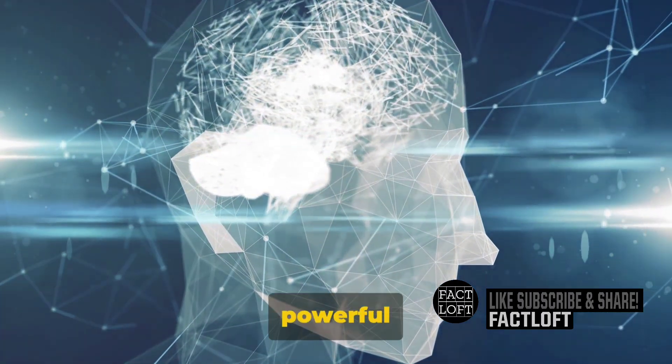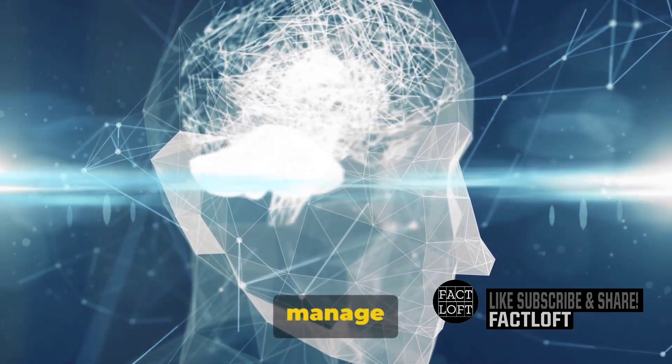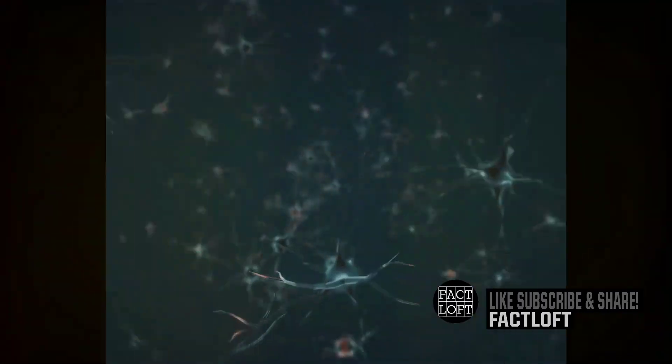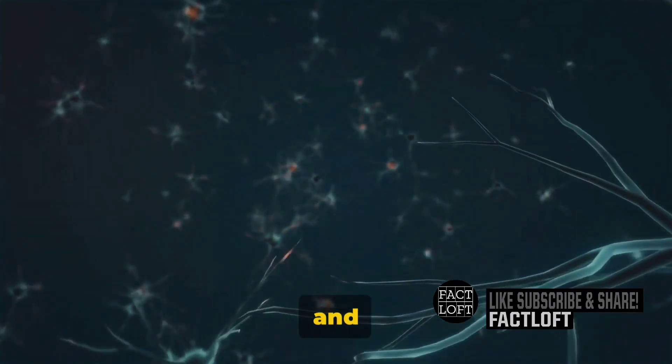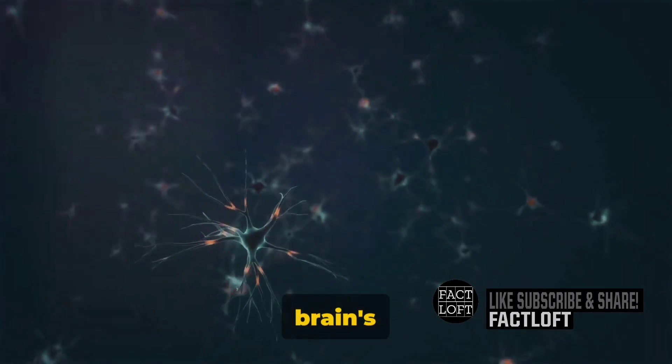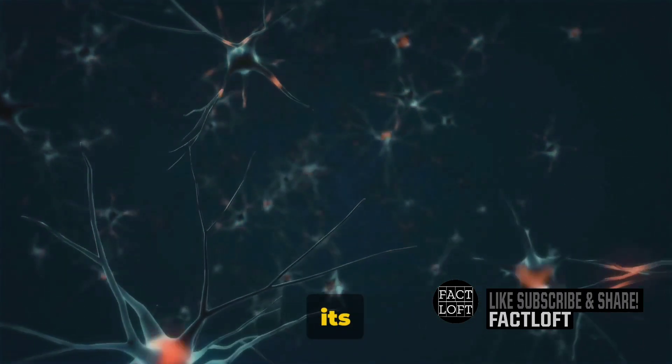So, if our brain is this powerful and complex, how does it manage all these functions? Cognitive functions, the processes our brain uses to absorb, process, and understand information, are the brain's secret tool for managing its responsibilities.